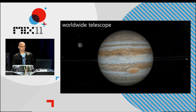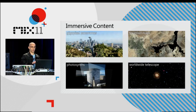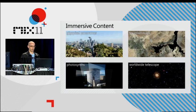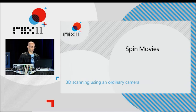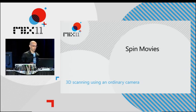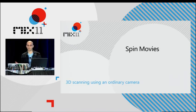Those are just four examples of immersive content types that Microsoft Research has had a part in. These are four examples you can get your hands on today, and I encourage you to go out on the web and search for them. But what I'm here to talk about today is something new from Microsoft Research. This is prototype work we're developing currently, so it's not available yet, but we hope to give you a good glimpse of where we're headed. The idea of this technology, which we're calling Spin Movies for now, is that we want to enable users to capture 3D objects using nothing more than an ordinary camera.